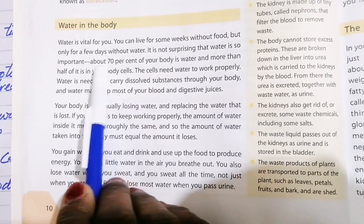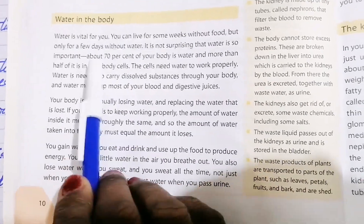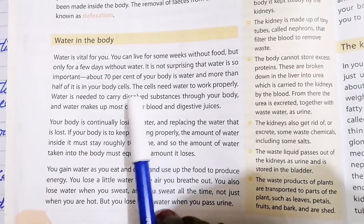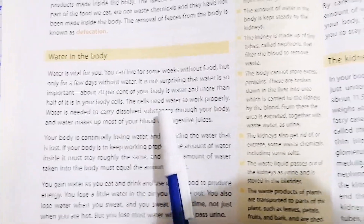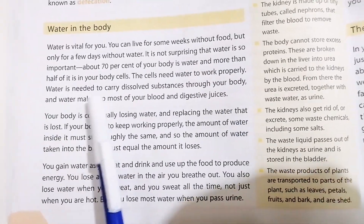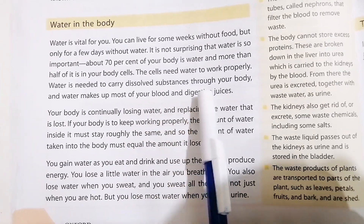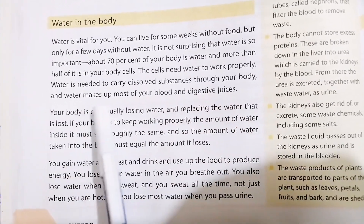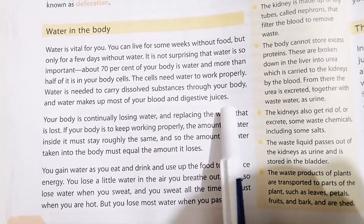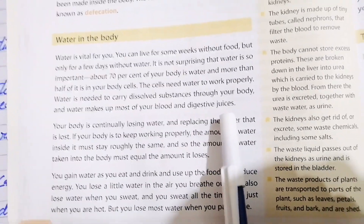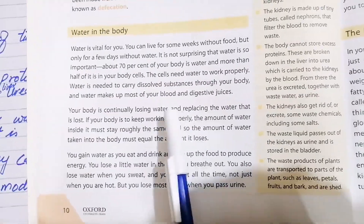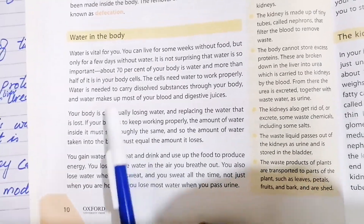The cells need water to work properly. Water is needed to carry dissolved substances through our body. Water makes up most of our blood and digestive juices. Water is also important when we eat, as it is part of the digestive juice we produce.